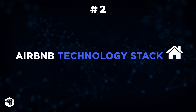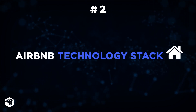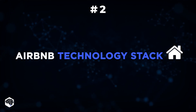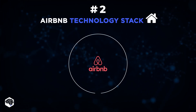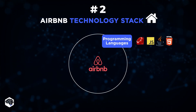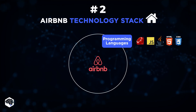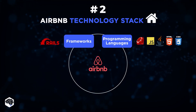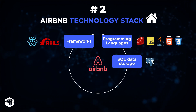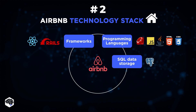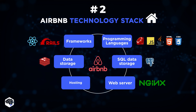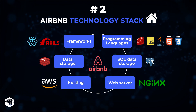Next comes the technology stack — that's a broad theme, so get your notes ready. To develop a platform like Airbnb, you might consider the following technologies: programming languages like Ruby, JavaScript, Java, HTML5, and CSS3; frameworks like Ruby on Rails and React.js; and services like PostgreSQL for SQL data storage, Redis for data storage, Nginx as a web server, and Amazon Web Services for hosting.